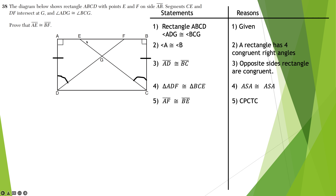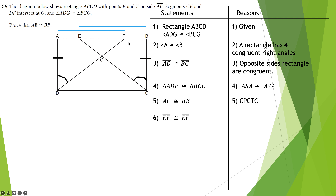Let's throw some numbers here: if AF was 10 and BE was 10 — they match because they're congruent sides — and EF was 7, then AE would be 3 and BF would be 3. You subtracted. The distance from A to F matches the distance from B to E, and the EF distance in the middle is the same on both. So EF is congruent to EF by reflexive — it's shared by both, even though it's just part of a side.